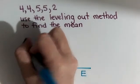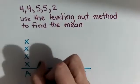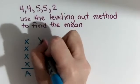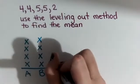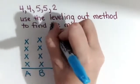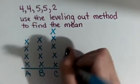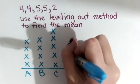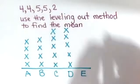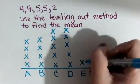So student A has four pencils. Student B has four pencils. Student C has five. Student D has five. And student E has two.